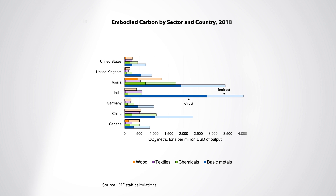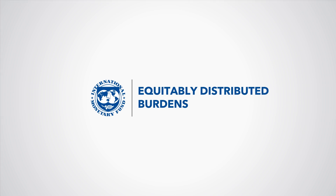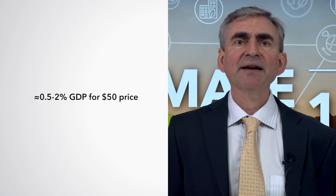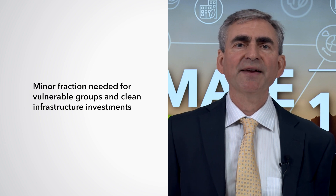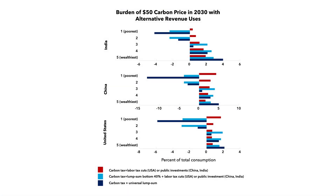Cost increases would be significantly smaller for advanced economies, given the lower embodied carbon in their industries. Recycling carbon price revenues, which are typically around 0.5 to 2% of GDP for a $50 carbon price in 2030, offsets most of the burden on the average household from higher energy prices. Measures for vulnerable groups and clean infrastructure investments need only use a minor fraction of the carbon pricing revenues. The figure illustrates different scenarios for revenue recycling. If all revenues were returned in equal lump sum payments for all, the bottom two quintiles are substantially better off on net.